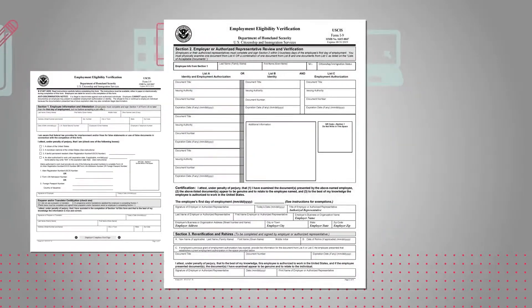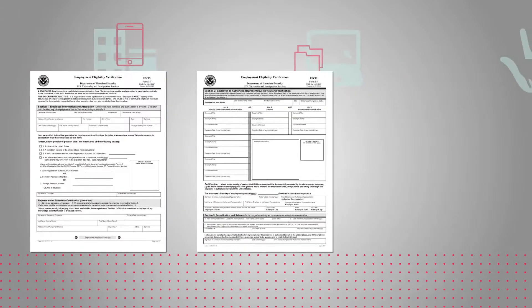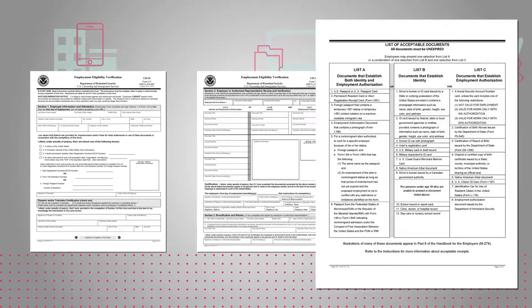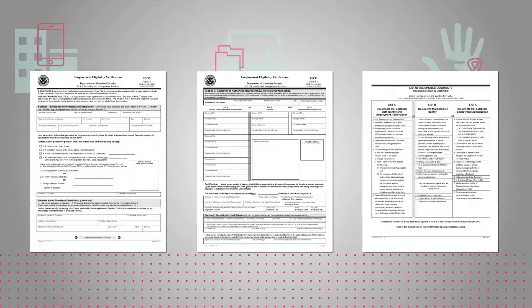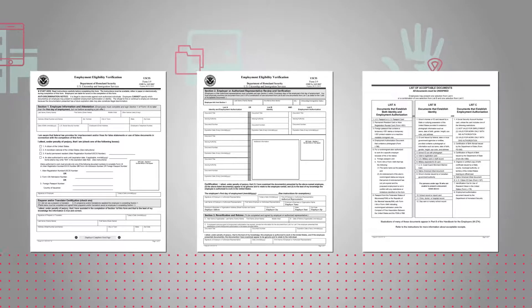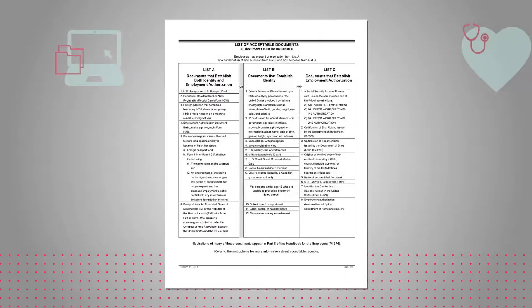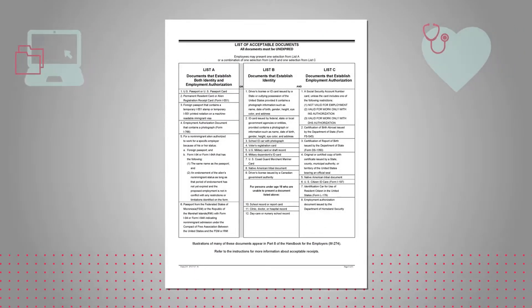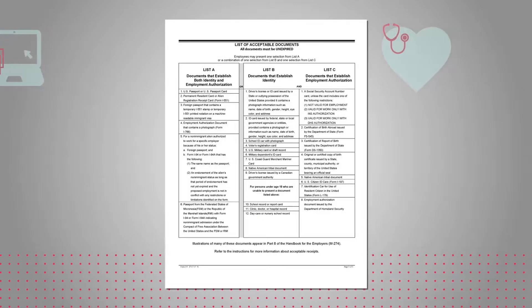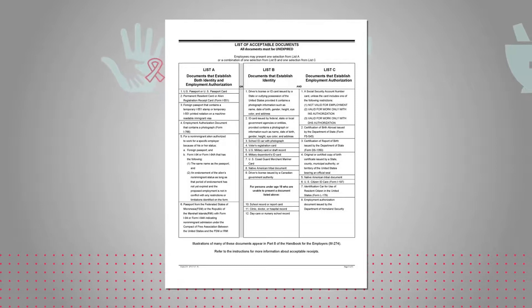The Form I-9 consists of three pages. Page 1, which the employee completes and signs. Page 2, which the authorized representative completes and signs. And page 3, which lists the acceptable necessary documents needed to complete the Form I-9. Before you begin the Form I-9 completion process, take a moment to review page 3. You'll want to gather your identification and employment authorization document, or documents, from the lists of acceptable documents that you decide to use.